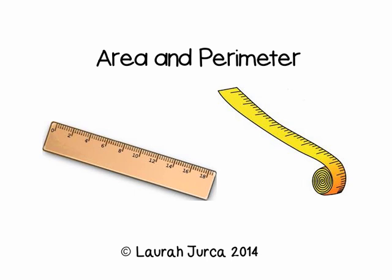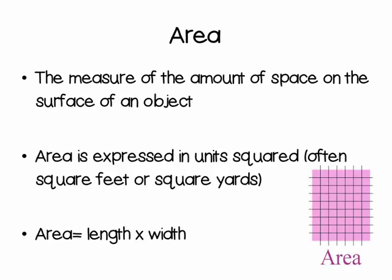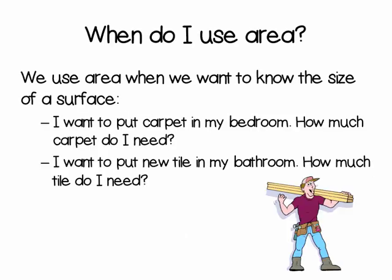Today we're going to be talking about area and perimeter. Area is the measure of the amount of space on the surface of an object. Area is expressed in units squared, such as square feet or square yards. The formula for finding area is area equals length times width. We use area when we want to know the size of a surface.